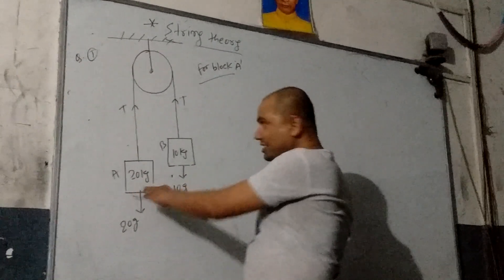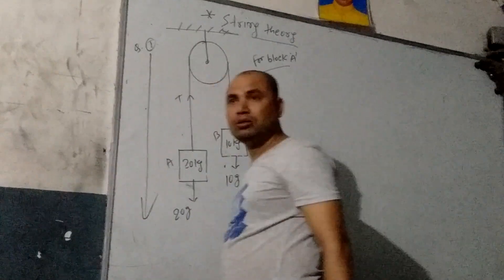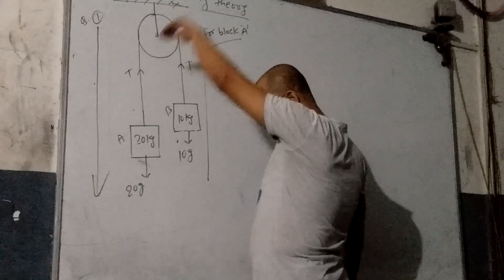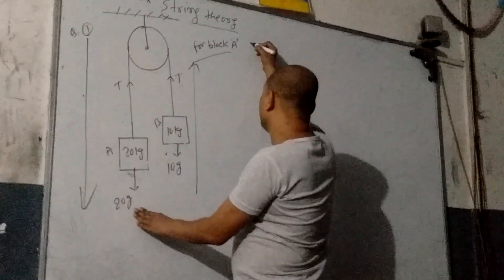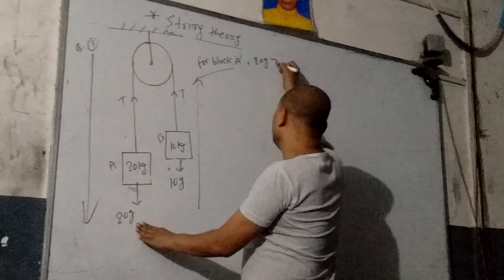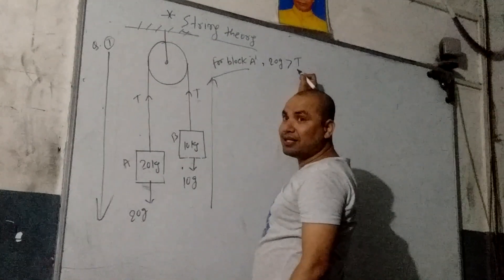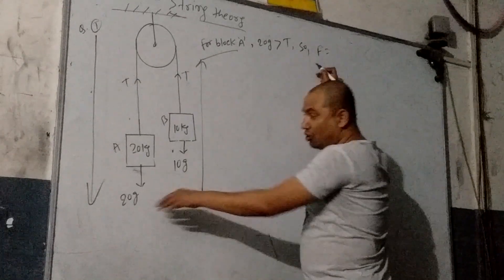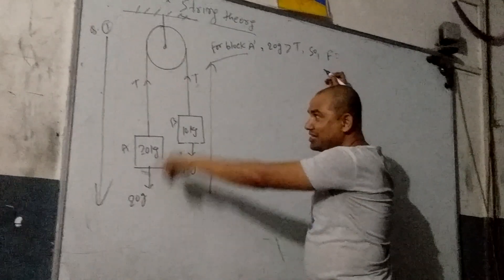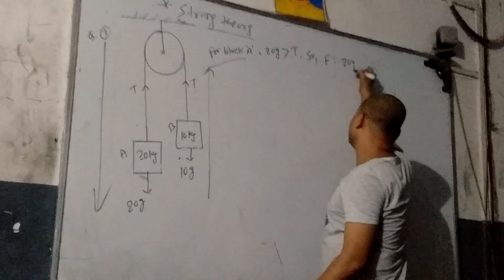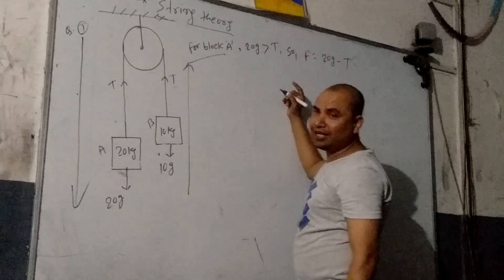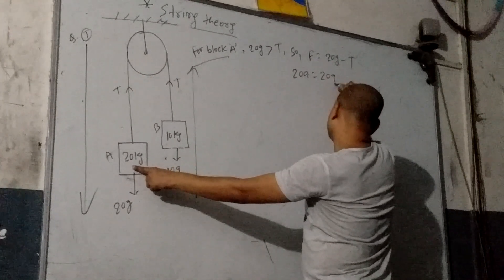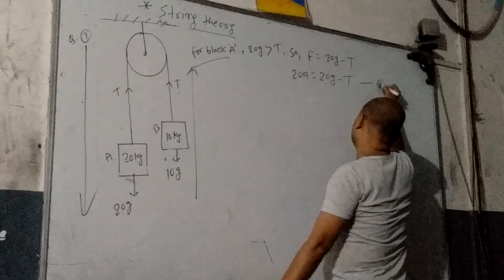Block A is heavier, so it will move downward. Block B is lighter, so it will move upward. For block A moving downward, 20g is greater than the tension. The net force is downward: 20g minus T. Applying F = MA, with M = 20, we get: 20A = 20g − T. This is equation one.